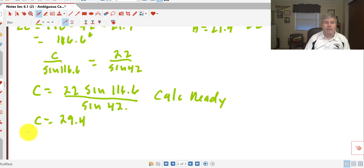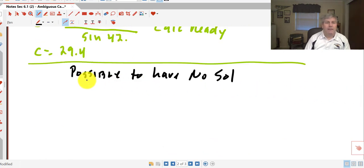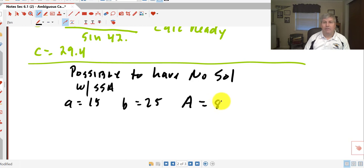Now there is a possibility that we could have no solution for side-side-angle. In order to save time I'm not going to go through an example, but it is possible to have no solution. If you remember your triangle inequality from geometry and the sides, you might see that. If it violates the triangle inequality theorem, or you might do the work and get no solution or get an error on your calculator. That is also possible.